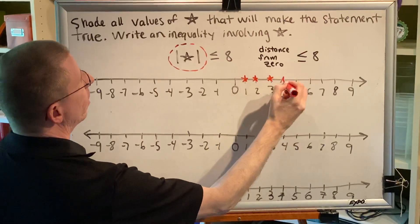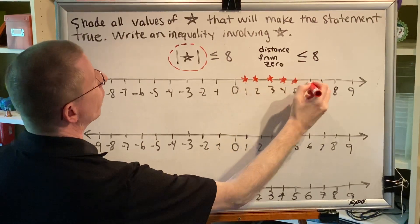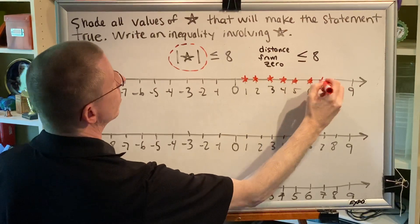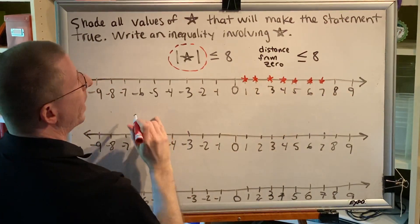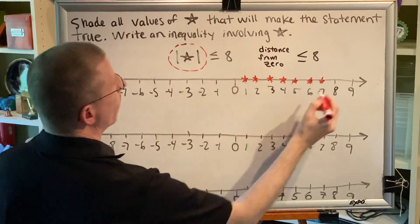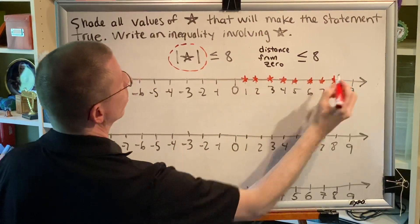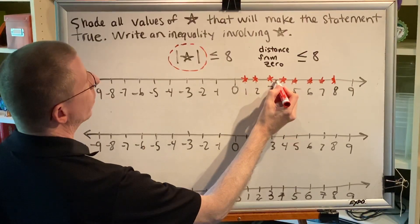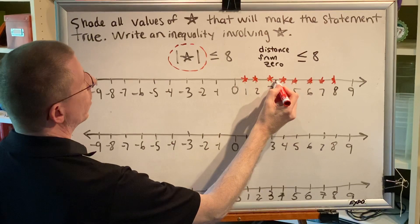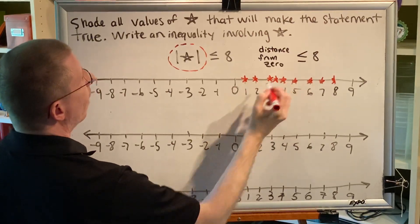Same thing with 3 and 4 and 5 and 6 and 7. How about 8? Is 8 less than or equal to 8 steps from 0? Yes, it's 8 steps from 0. So 8 we're going to count. How about the numbers in between the numbers? Is 3.5 less than or equal to 8 steps from 0? Yes, 3.5 is less.